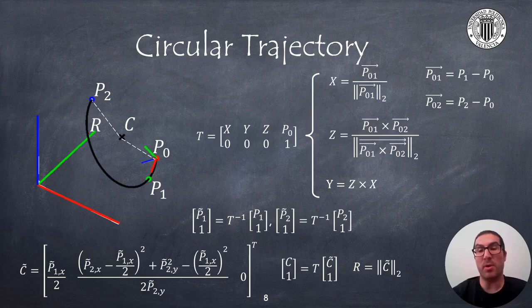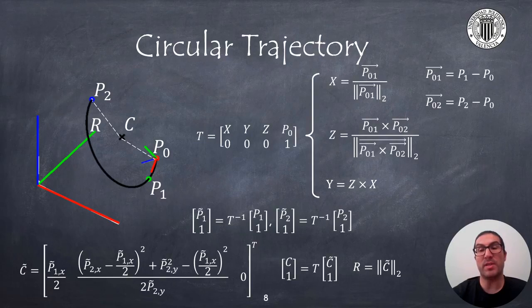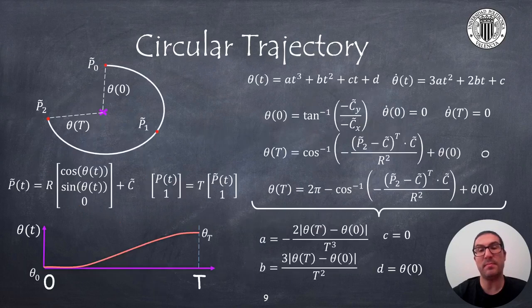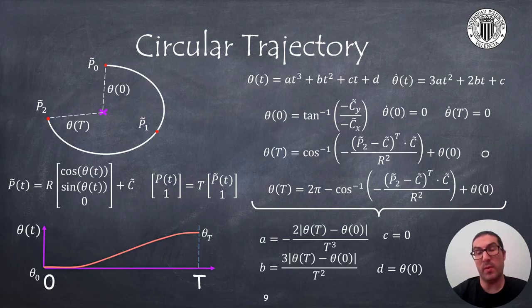From the coordinates of these points, then we can obtain the coordinates of the center of the circle and also its radius. All the maps for all these geometric relations are here expressed and included in the slide.